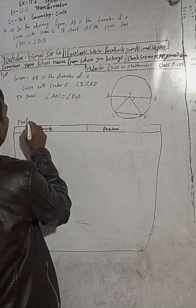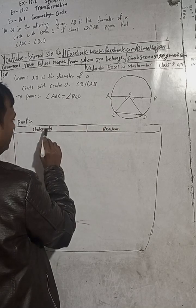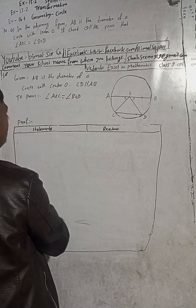But for that, what we can write here. This is the proof. Make a table. Statements and reasons. First of all, write here now.